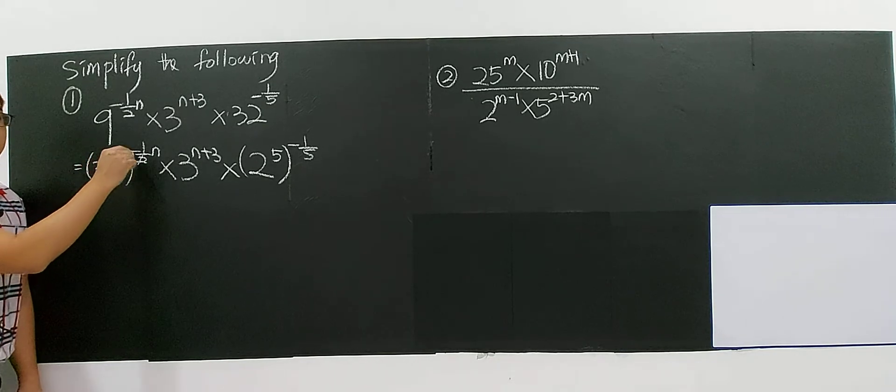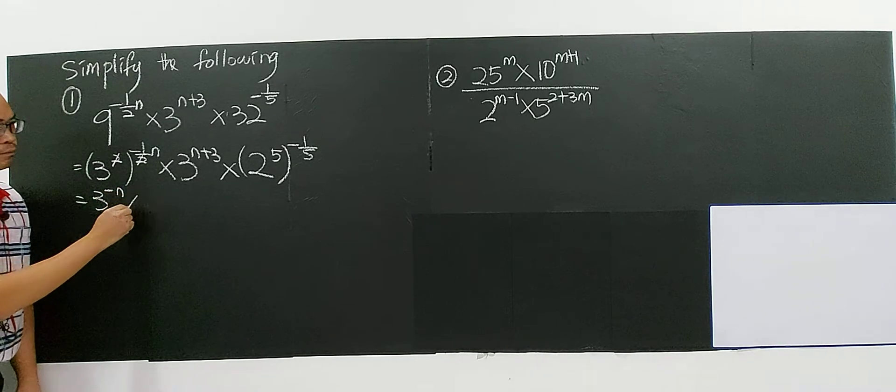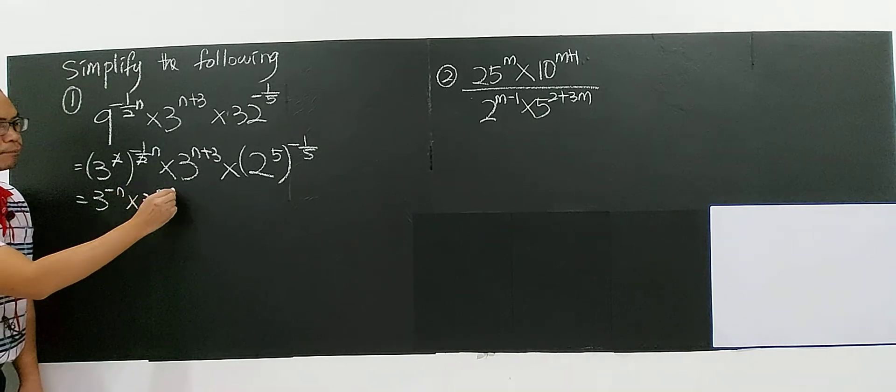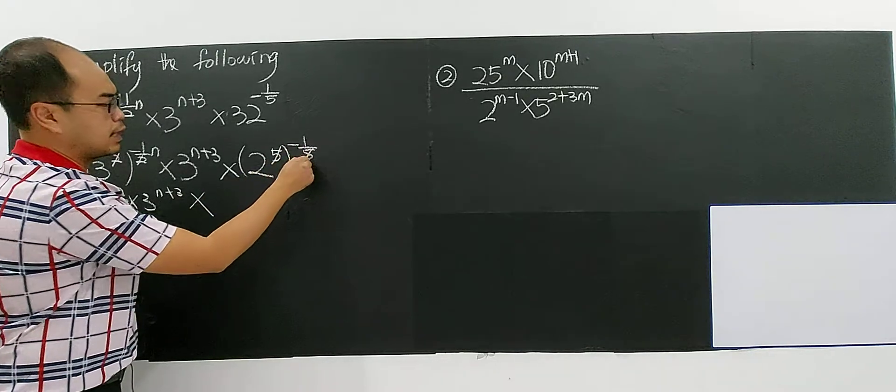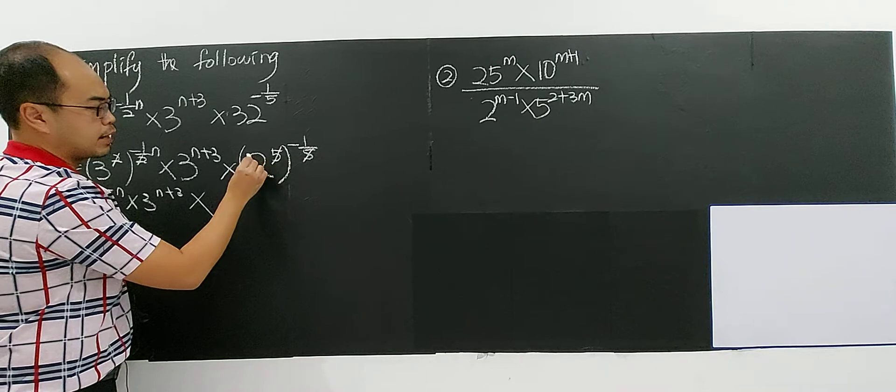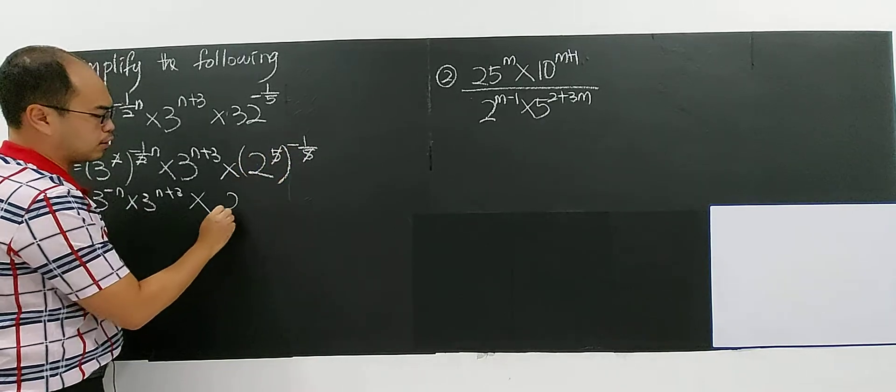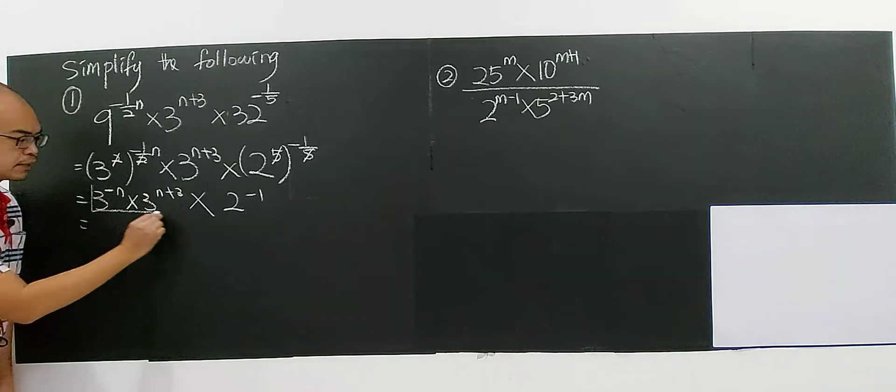A to the power of M and N, then you multiply the M and N. So you can tell you have negative N multiply the 3 power of N plus 3. And this you can eliminate the 5 M and N. A power of M and N you multiply. Then you have 2 to the power of negative 1. 2 power of negative 1.